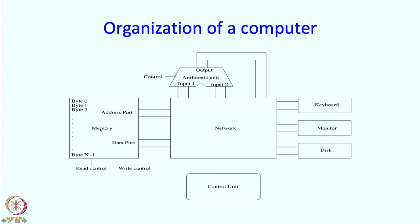One important part is the memory. It has capacitors to store different bytes. It has something called an address port, a data port, and also control ports. There can be a read control port and a write control port, or there can be just a single control port which tells the memory whether writing or reading has to be done. Perhaps the most interesting part of the computer is the so-called arithmetic unit.